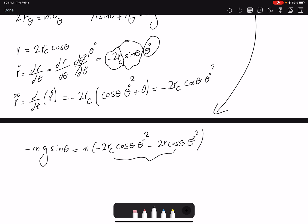So if you look at this, this would be negative 4Rc cosine theta theta dot squared. And I have M here and M here. That would be canceled. Then I have negative signs here that can be canceled.